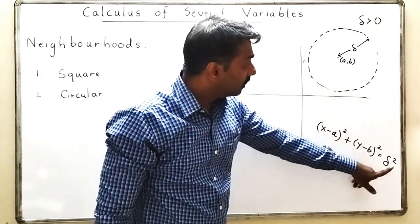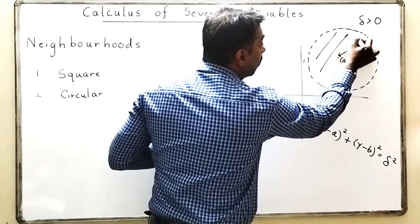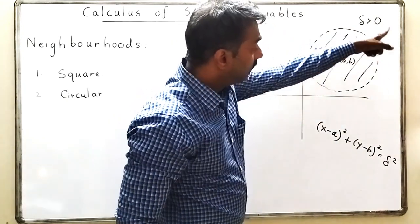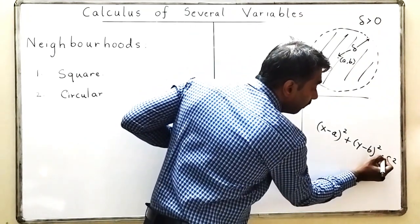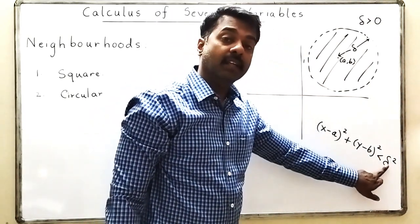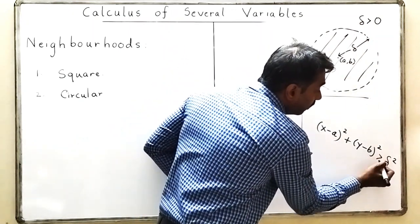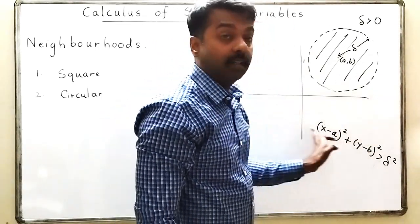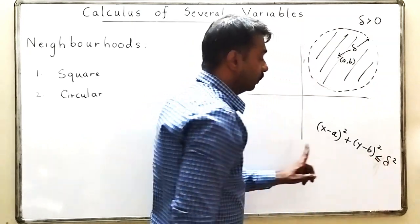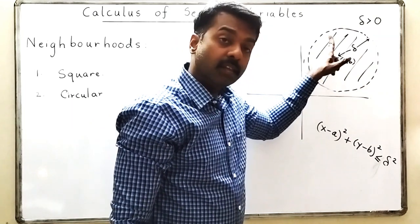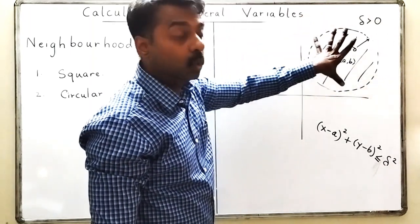I am interested in the region which is inside this circle - I do not even want the boundary. So I want to collect all points which are inside the circle. To get points inside the circle, I replace the equals sign with less than delta square. If I use greater than, I get points outside the circle. If I use less than or equal to, I get points inside and on the circle, which we call a closed disk.